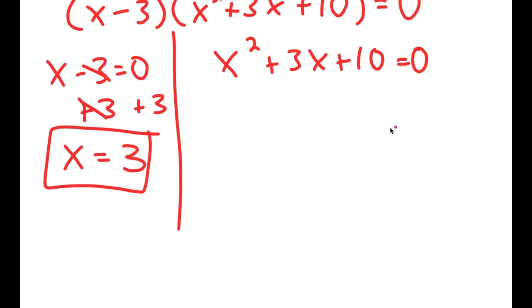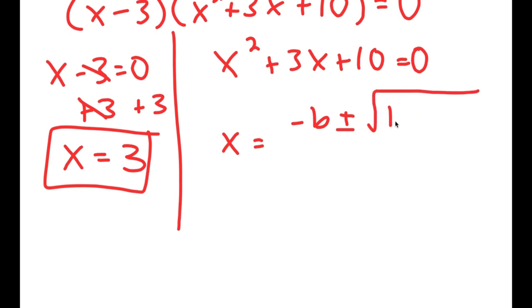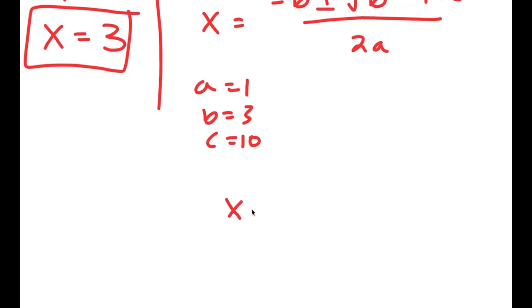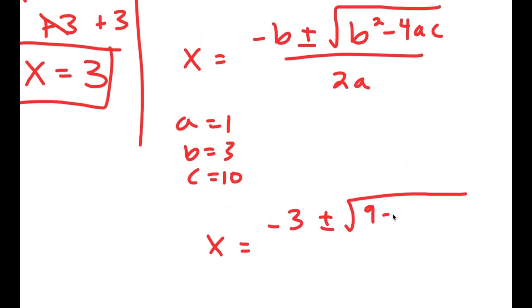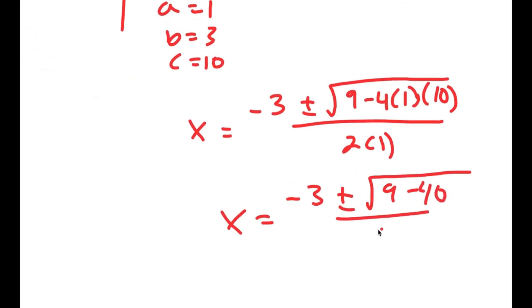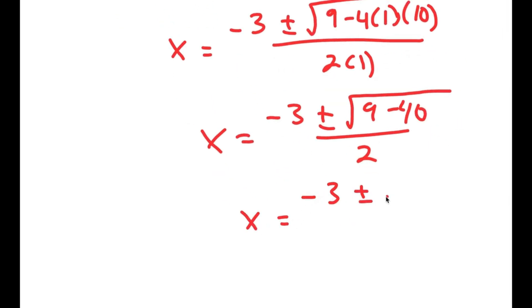For x squared plus 3x plus 10 equals 0, this is a quadratic equation, so I can use the quadratic formula. Recall the quadratic formula is negative b plus or minus the square root of b squared minus 4ac, all over 2a. In this case, a is 1, b is 3, and c is 10. So I get x equals negative 3 plus or minus the square root of 3 squared, which is 9, minus 4 times 1 times 10, all over 2 times 1. This equals negative 3 plus or minus the square root of 9 minus 40 over 2, which is negative 3 plus or minus the square root of negative 31 over 2.